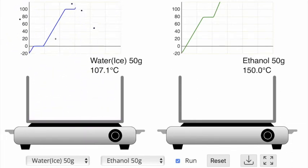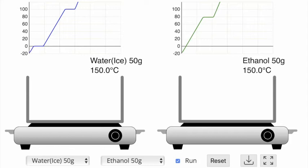Although it's difficult to tell from this simulation, the enthalpy of vaporization — the energy needed to change phase from liquid to gas — is also higher for water than it is for ethanol. For water, it's about 40.7 kilojoules per mole. For ethanol, it's about 38.6 kilojoules per mole.